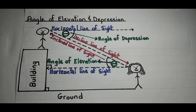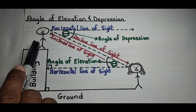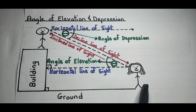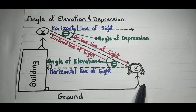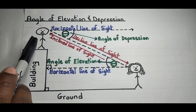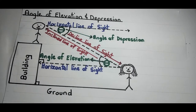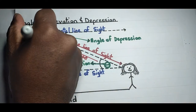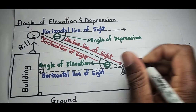Let's get right into the lesson. Here we have a diagram with a boy at the top of a building and a girl at the bottom of a building. Let's call the boy Bill and the girl Pam.